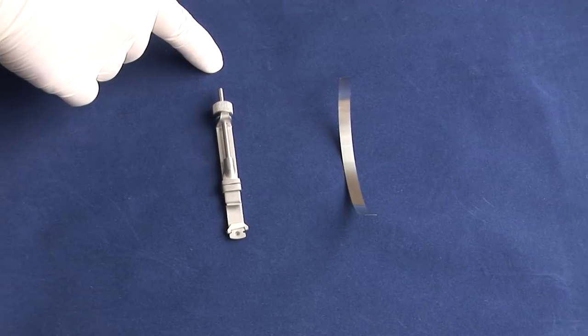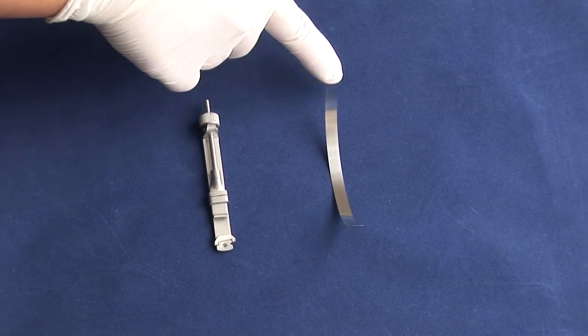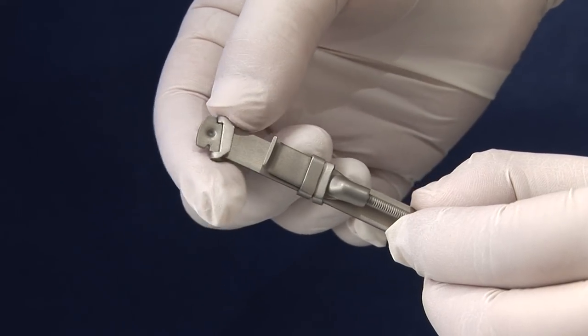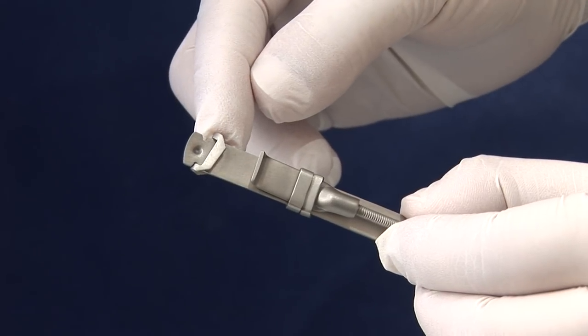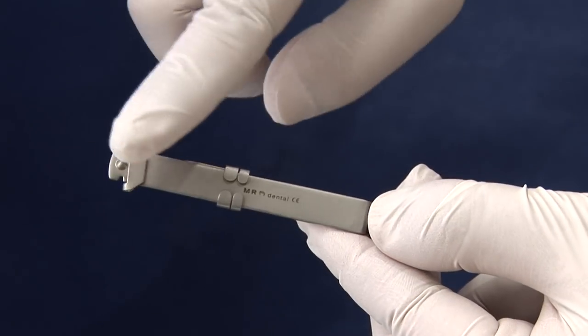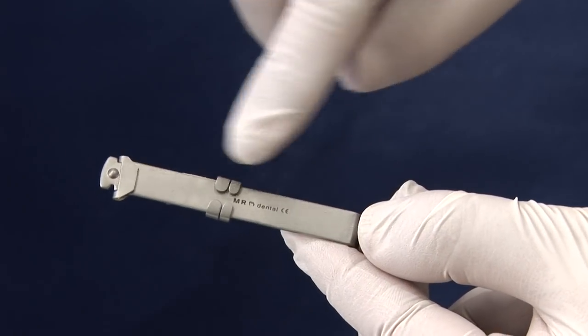This video will demonstrate how to prepare a matrix retainer and matrix band. On this side of the matrix retainer you will find the latch and the locks. The other side is flat and should face towards the cheek.